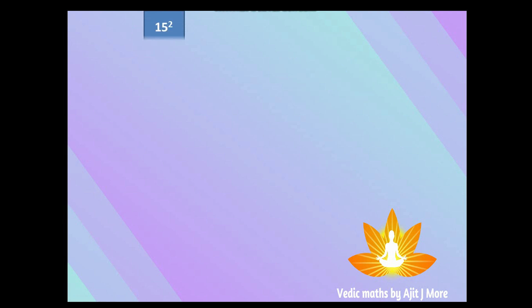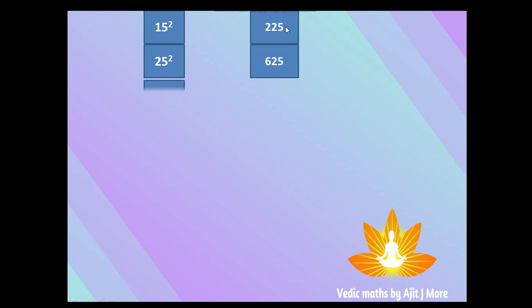Let's do rapid examples: 15 squared — before 5 is 1, after 1 is 2, 1×2=2, attach 25 → 225. 25 squared — before 5 is 2, after 2 is 3, 2×3=6, attach 25 → 625. 35 squared — after 3 is 4, 3×4=12, first part 12, second part 25 → 1225. 45 squared — 4×5=20, attach 25 → 2025. 55 squared — 5×6=30, attach 25 → 3025.